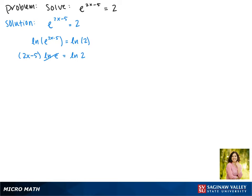The natural log of e is equal to 1, so this gives us 2x minus 5 equals the natural log of 2.